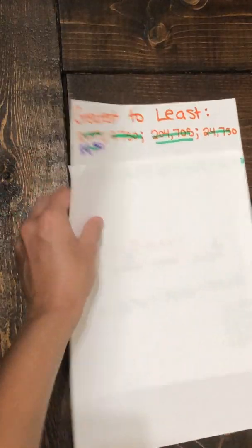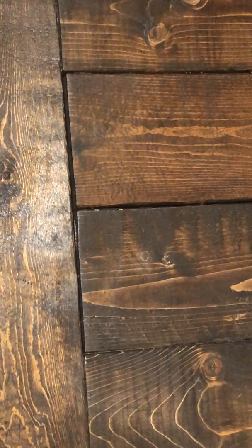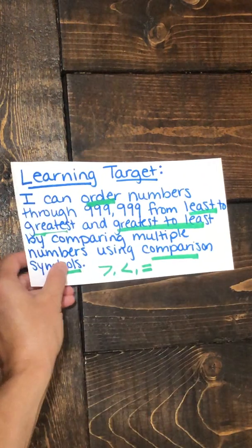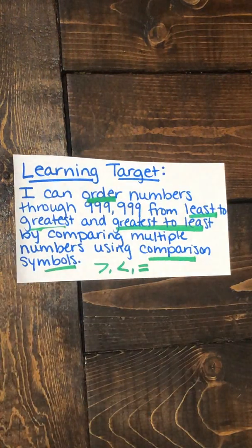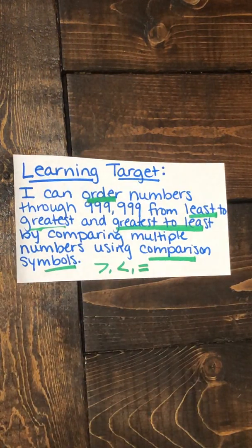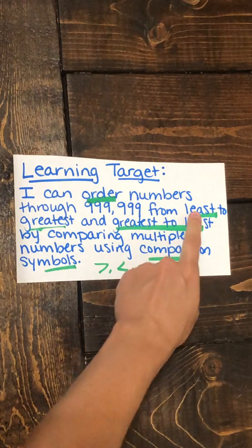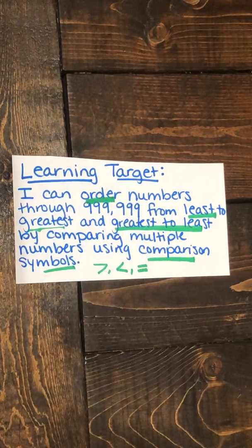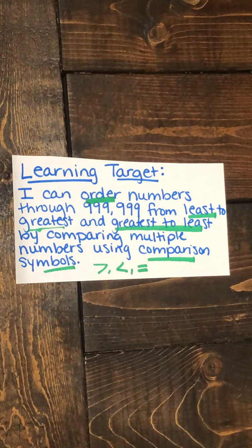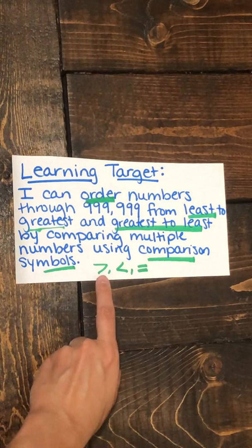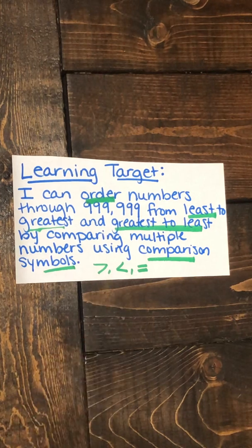So let's look at our learning target one more time for today. I can order numbers through 999,999 from least to greatest and greatest to least by comparing multiple numbers using comparison symbols. And we looked at greater than, less than, and equal to.